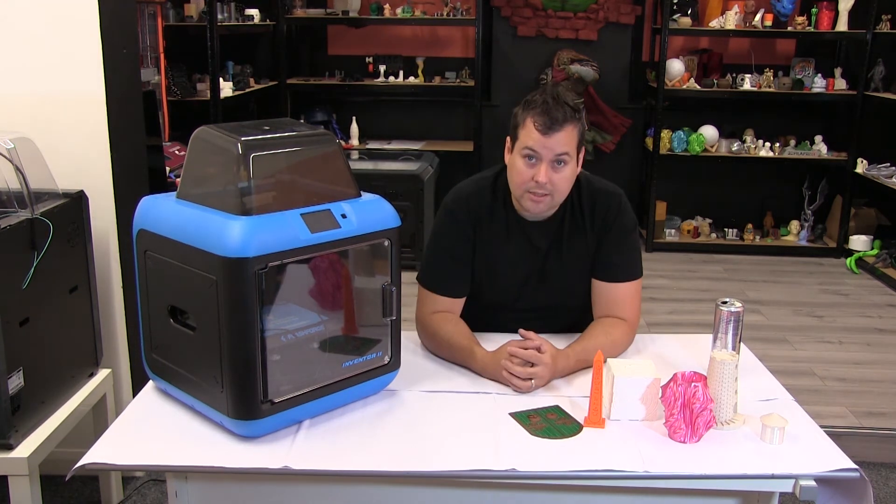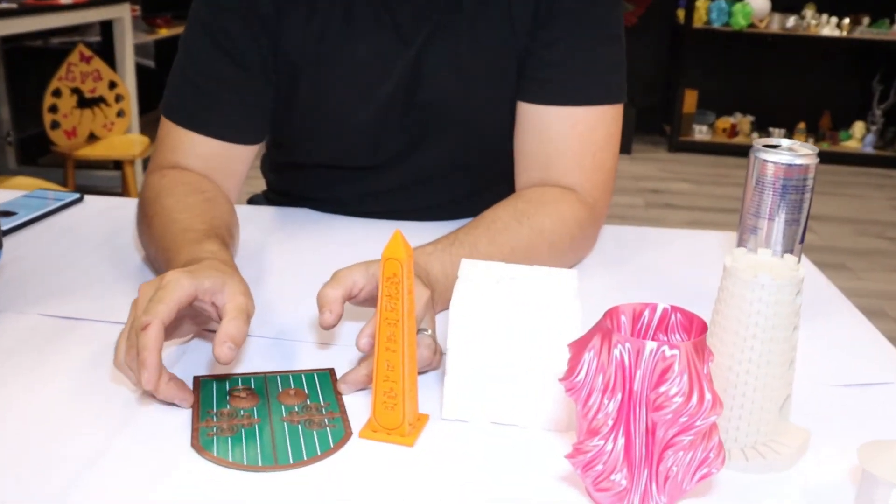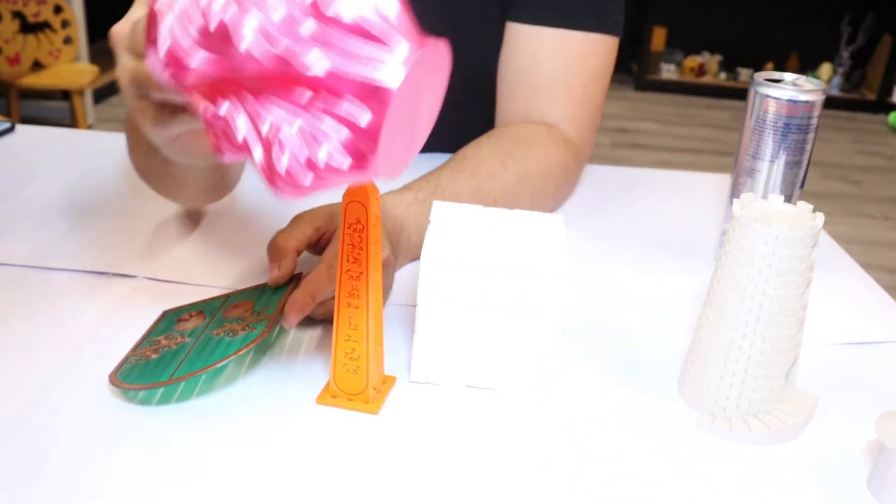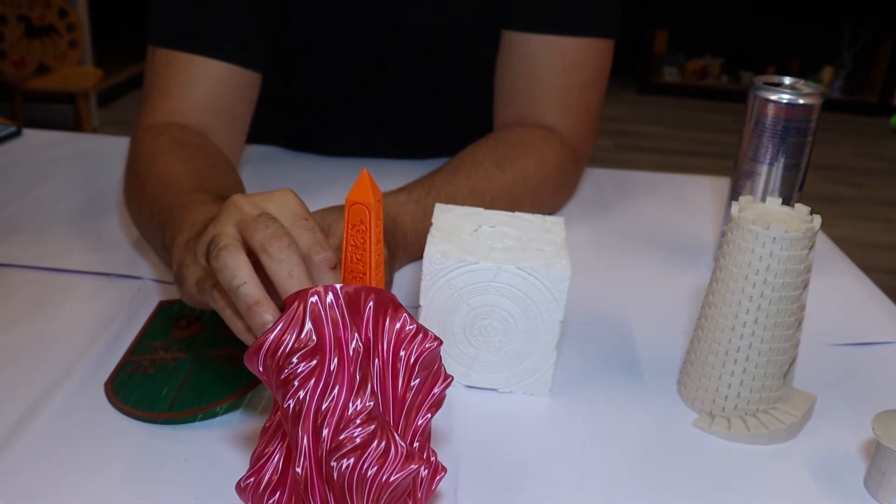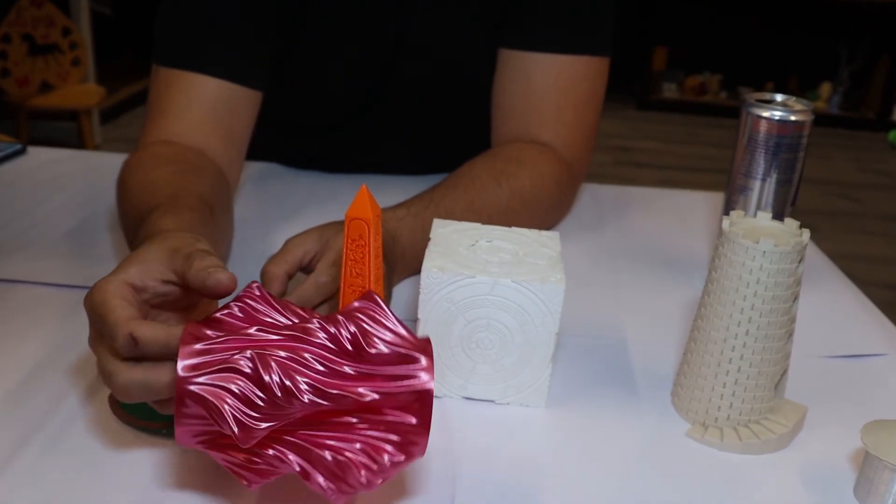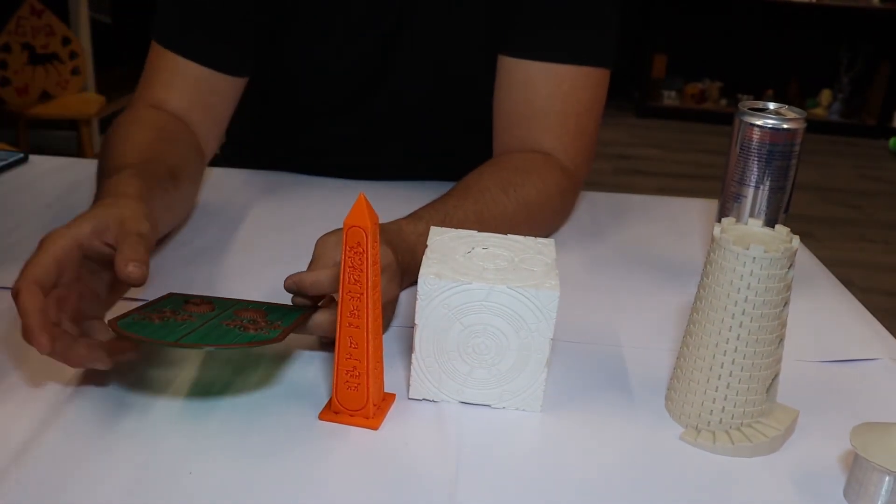So let's take a look at some of the models we've printed with this. Because of the smaller build volume, we were a little bit limited with some of the things we could do. We started off by doing the obligatory vase, and in vase mode that came out really nice—super clean, nice consistent extrusion, really good.